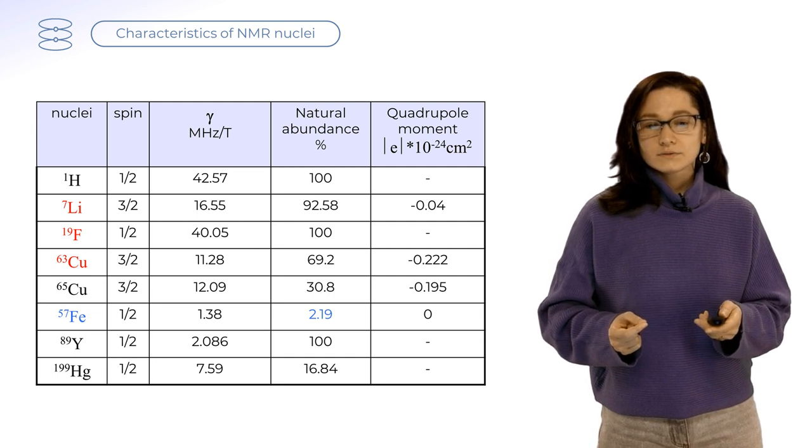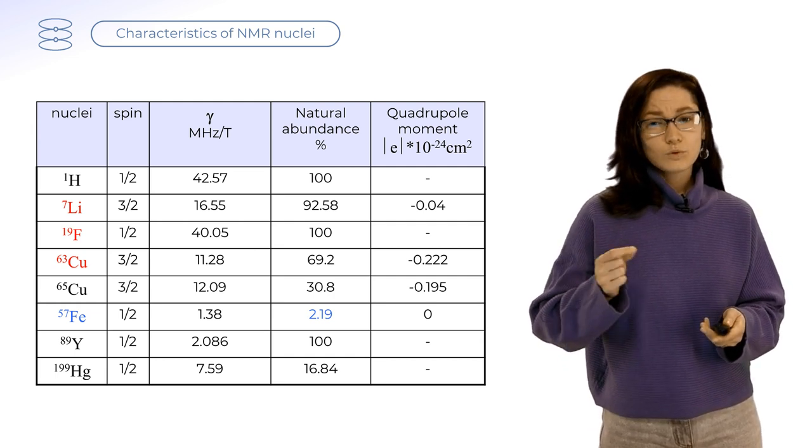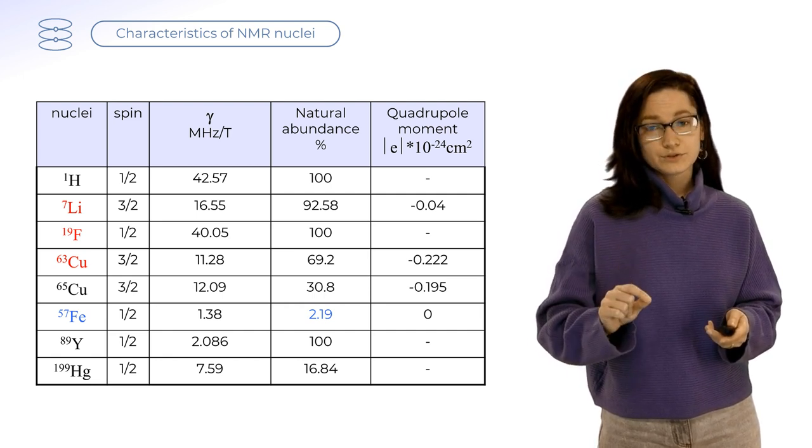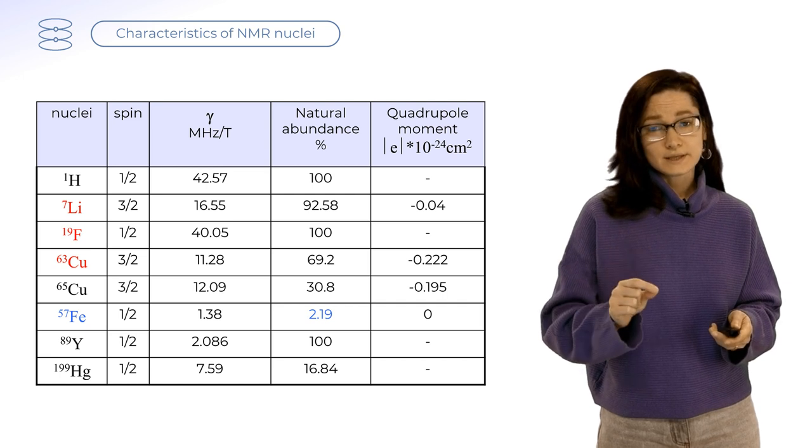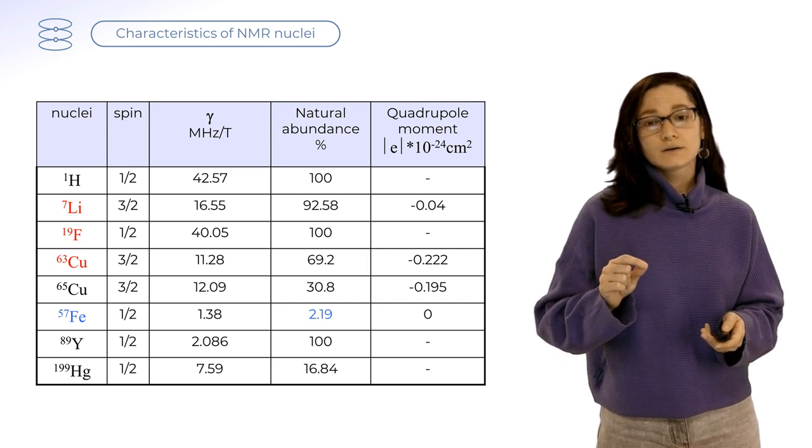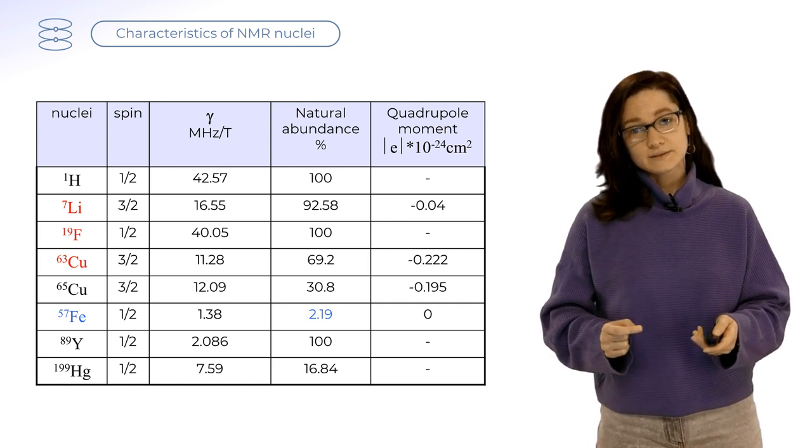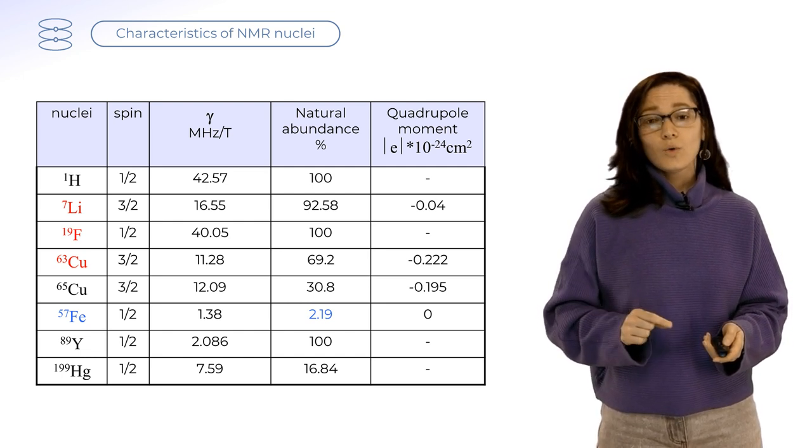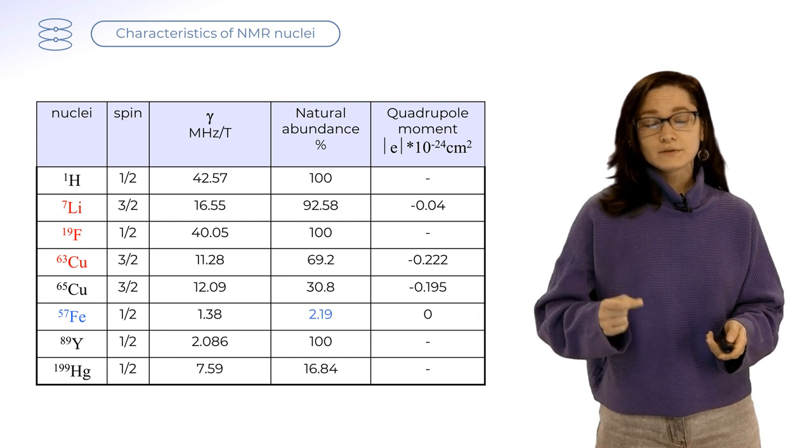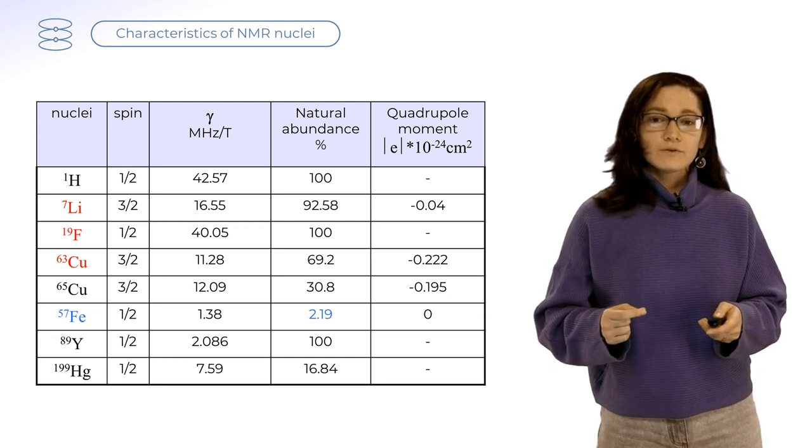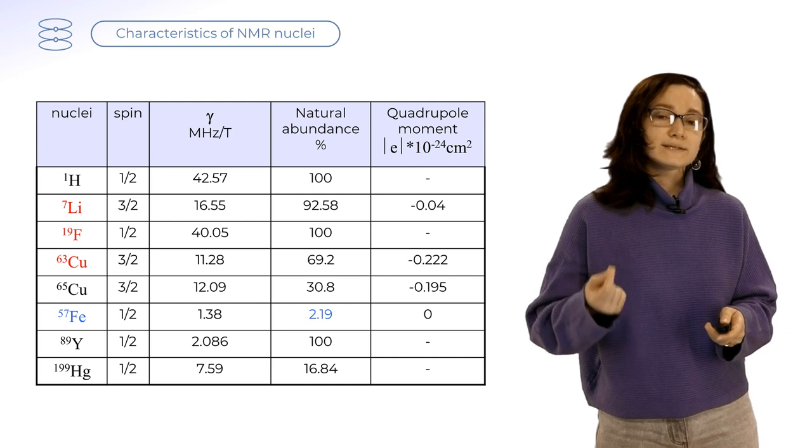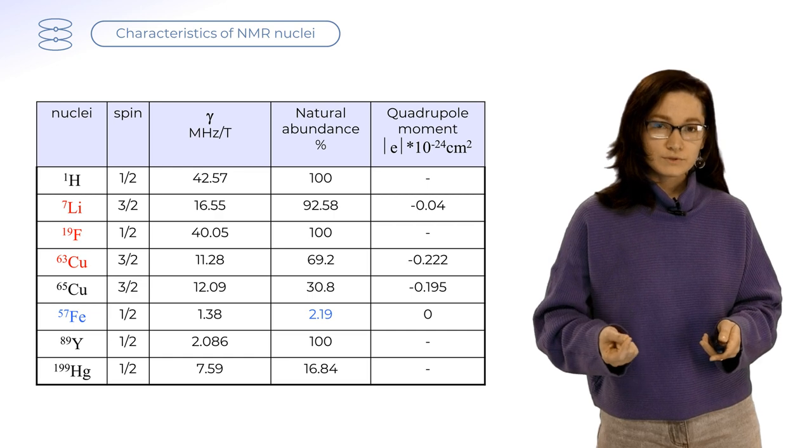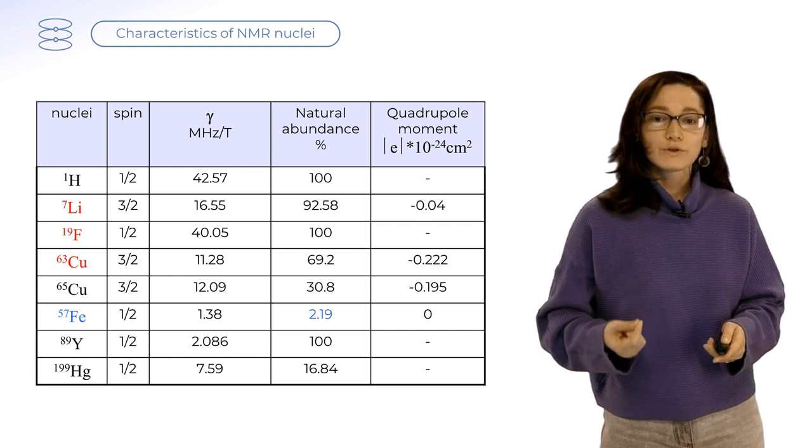And about quadrupole moment. We'll talk about later, the NMR spectroscopy. But the half integer, when spin is 1/2 nuclear, are the best nuclear for NMR spectroscopy. While others, which have the bigger spin, have less intensive and more difficult for stimulation spectra. Because there are quadrupole effects.